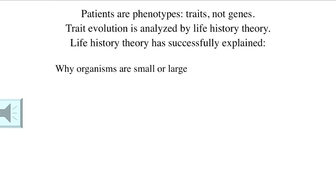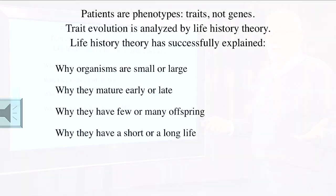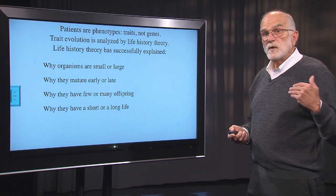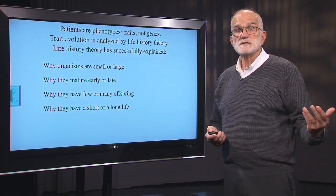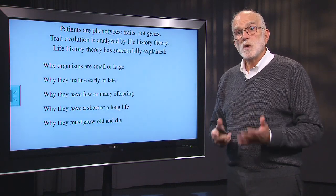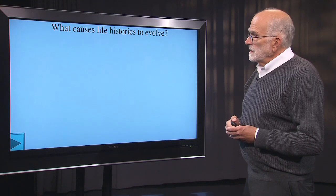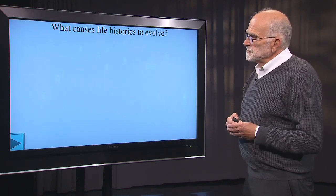Life history evolution explains why organisms are small or large, why they mature early or late, why they have few or many offspring, and why they have a short or long life. These are answers to big questions, including one that's quite important now as degenerative disease mounts around the globe — life history evolution explains why organisms must grow old and die. So, what causes life histories to evolve?